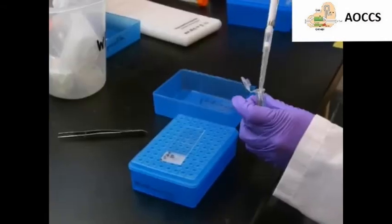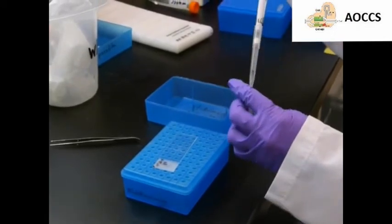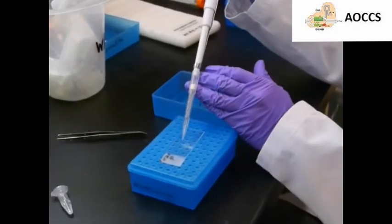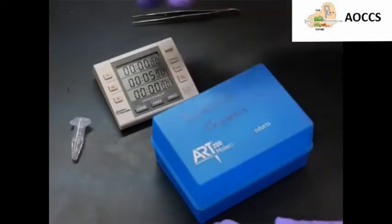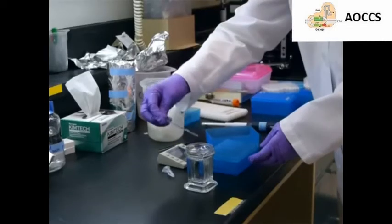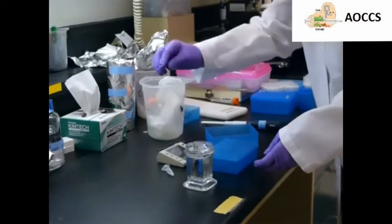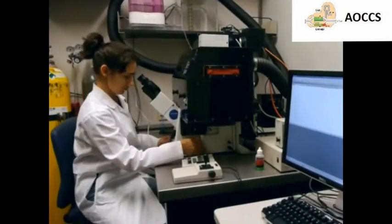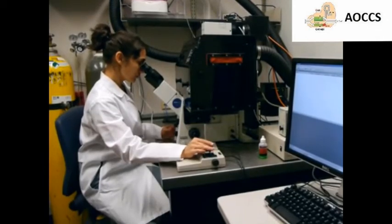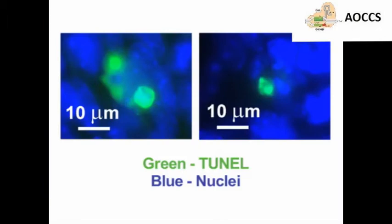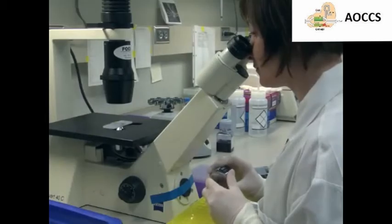Following incubation, stop buffer is added to the tissue section to cease the TUNEL reaction, and after a short incubation, the sections are washed with phosphate-buffered saline. Finally, tissue sections stained using fluorescently tagged dUTP are visualized using fluorescence microscopy and assessed for localization of TUNEL-positive cells within a given tissue. One can quantify cell death simply by counting the percentage of TUNEL-positive cells in a given tissue section.